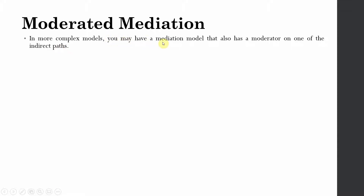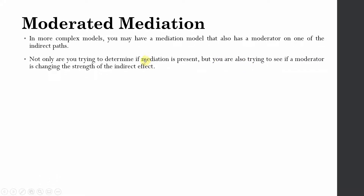In a more complex model, you may have a mediation model that also includes a moderator on one of the indirect paths. You may have one moderator affecting the indirect path from the IV to the DV. Not only are you trying to determine if there is an indirect effect of X on Z through another variable M, but you are also trying to see if the moderator changes the strength of that indirect effect — whether it is higher at a higher level of the moderator or lower at the lower level.